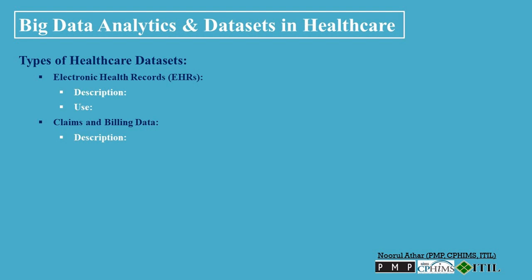Claims and Billing Data — Description: information related to insurance claims, billing, payment, and other administrative data. Use: analysis of cost, utilization, and healthcare delivery efficiency. Clinical Trial Data — Description: data generated from clinical research, including trial design, patient information, results, and adverse events. Use: evaluate drug or treatment effectiveness and safety.